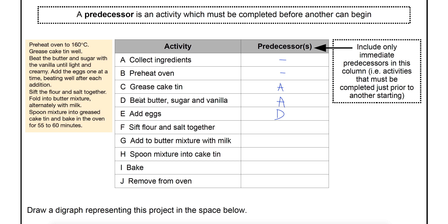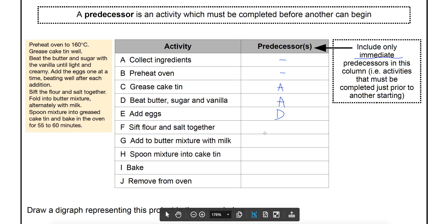Note that to do D you needed A, and to do E you needed D — but we're not going to list A as a predecessor of E as well. We only list the things that come immediately before it, not everything that comes before it, otherwise this table is going to get very full because you'd be repeating A for everything that comes after D and E. So for F — sifting the flour and salt in a different bowl — you don't need the butter beating done. Really, the only thing that needed to be done is you needed your ingredients.